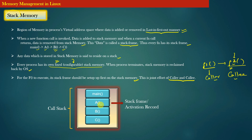In this diagram, we have a main function which invokes function A, function A invokes function B, and function B invokes function C. Each block shown is a stack frame, also known as an activation record. Every function has its own stack frame which must be pushed into the stack memory for the function to execute. Stack frames are pushed from higher address towards lower address, so the most recently invoked function lies at the bottom of the stack. When function C completes and returns, its stack frame is popped out of the stack memory.